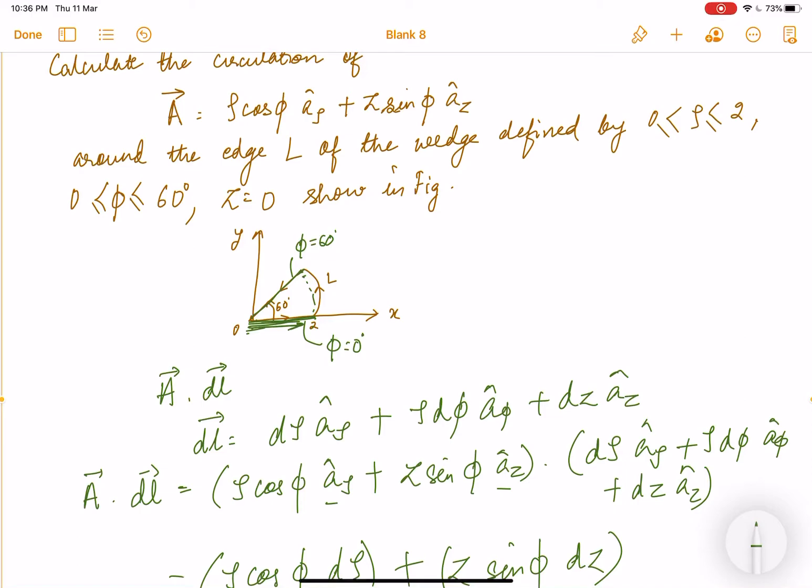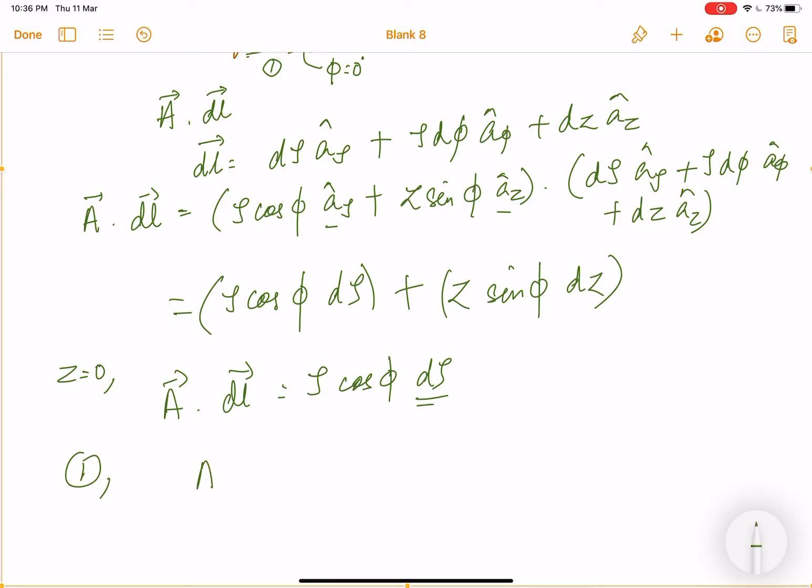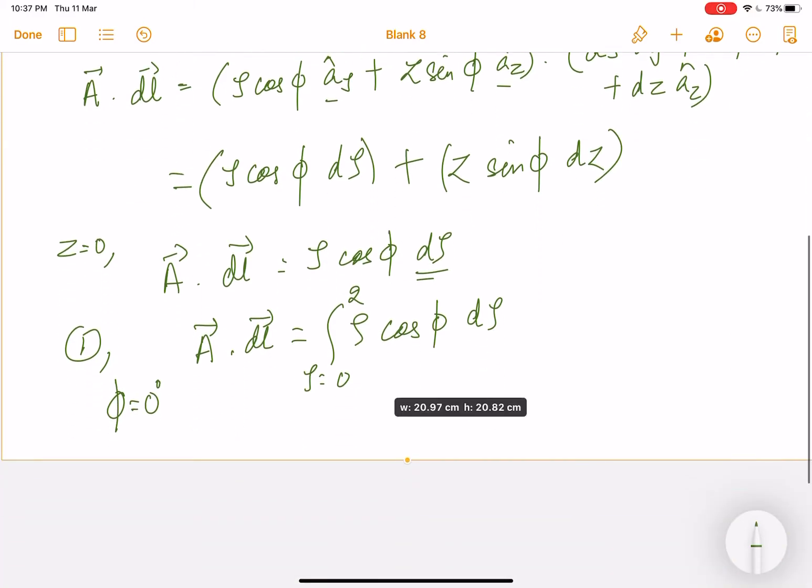varying, but we don't need that because it's already cancelled—there's no a_φ term in the A vector. So suppose I write this as path 1 and this as path 2. For path 1, if I have to take out A dot dl, I'll write ρ cos φ dρ where ρ varies from 0 to 2, and here